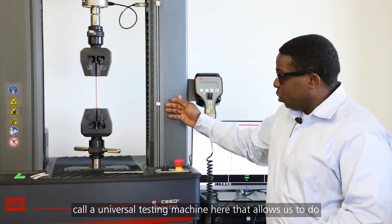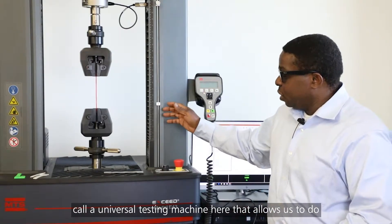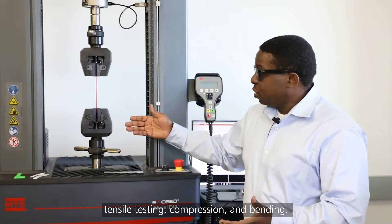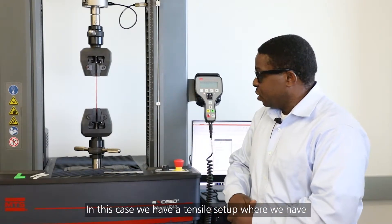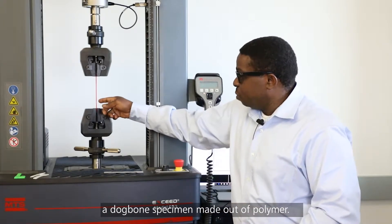For instance, we have what we call a universal testing machine here that allows us to do tensile testing, compression, and bending. In this case, we have a tensile setup whereby we have a dogbone specimen made out of polymer.